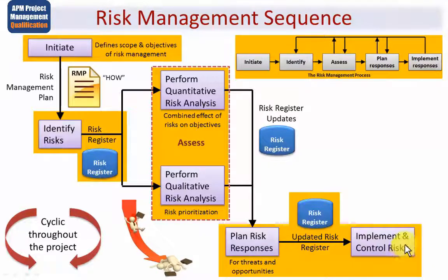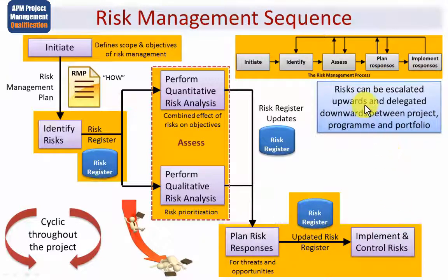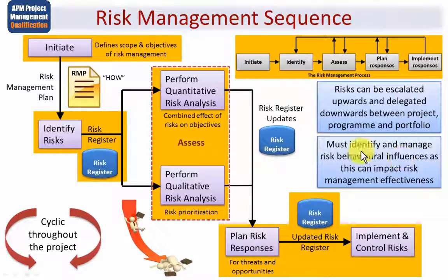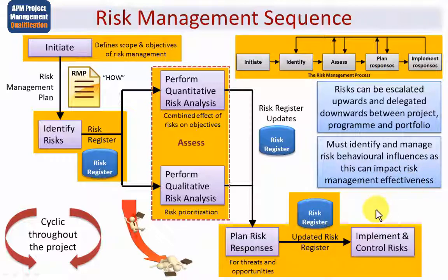This brings us to the final step: implement and control risks, carried out during the implementation phase. Risks can be escalated upwards and delegated downwards between a project, programme or portfolio. Escalation processes will normally include management by exception and the use of tolerances. According to the nature and type of each risk, you may need decisions made by someone more senior. Risk behavioural influences also need to be identified and managed, as these too can impact risk management effectiveness.